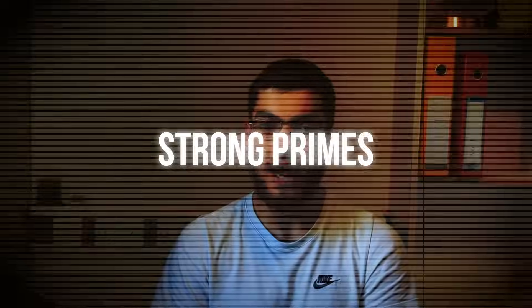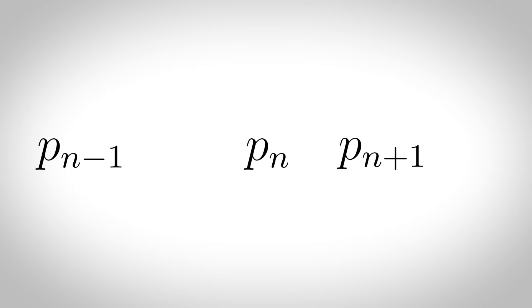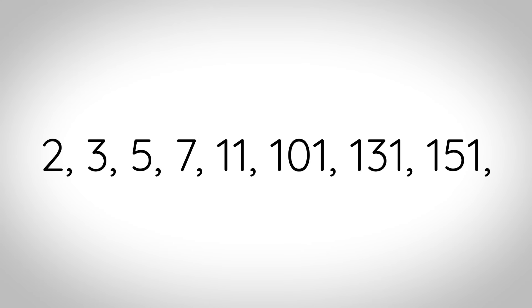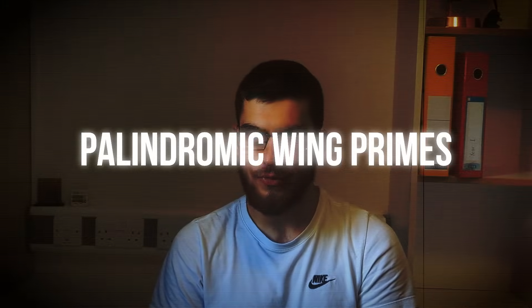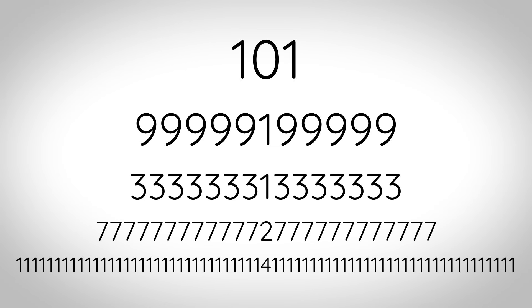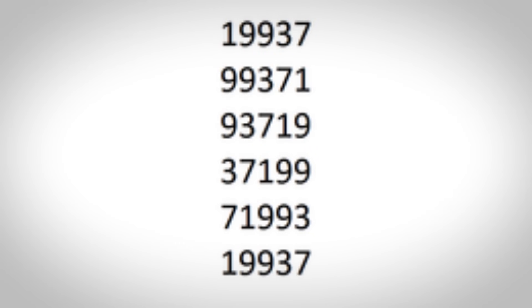Strong primes: a strong prime is a prime p which is closer to the following prime than it is to the preceding prime. Palindromic primes: primes that remain the same when their decimal digits are read backwards. Palindromic wing primes: primes where all digits except the middle digit are equal. Circular primes: a prime number that remains prime on any cyclic rotation of its digits.